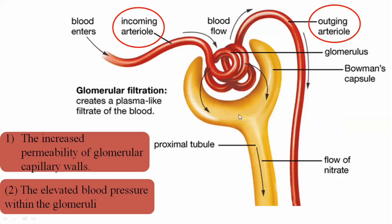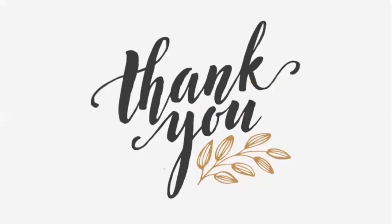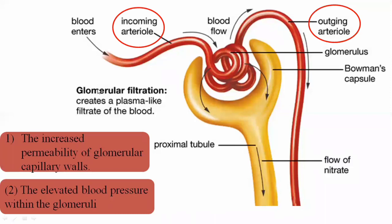This is how blood is filtered from the glomerulus into Bowman's capsule, completing the filtration process. This lecture covered the process of glomerular filtration. The next video will cover glomerular filtration rate — at what rate the glomerular filtrate is formed and in what quantities.